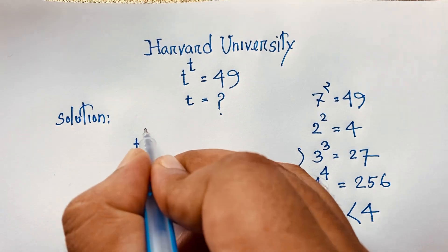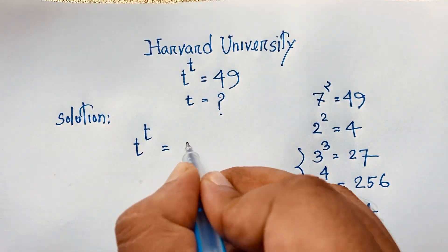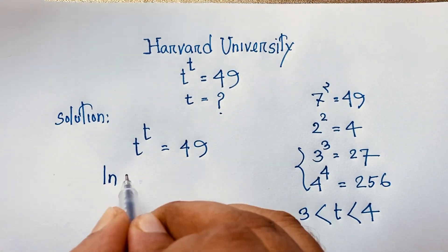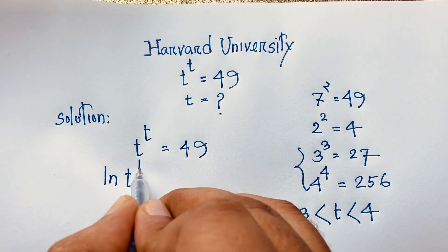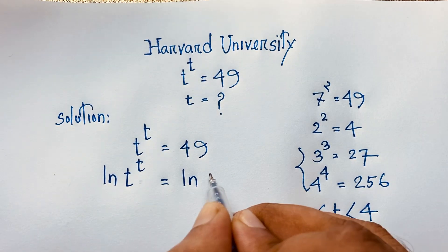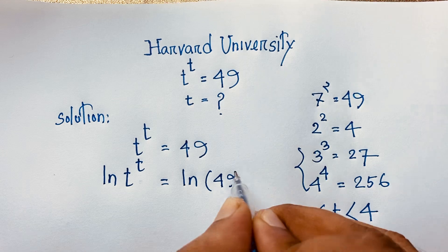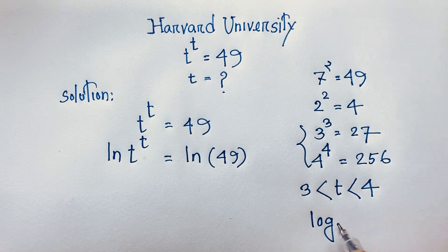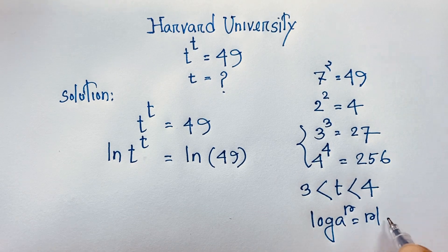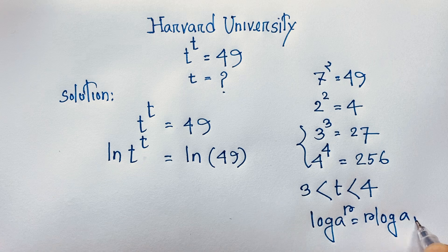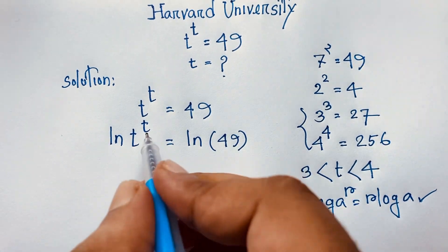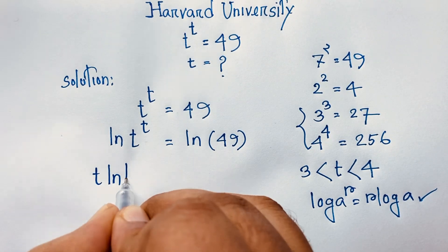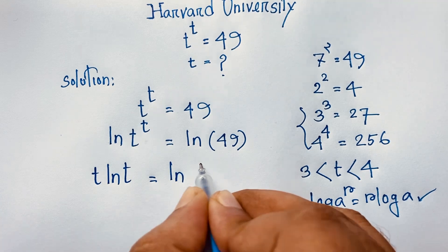Here, t to the power t is equal to 49. I will solve this question step by step. I apply natural log (ln) to both sides: ln of t to the power t equals ln 49. Using the logarithm power rule — ln(a^r) = r·ln(a) — the exponent moves to the front, giving us t·ln(t) = ln 49.